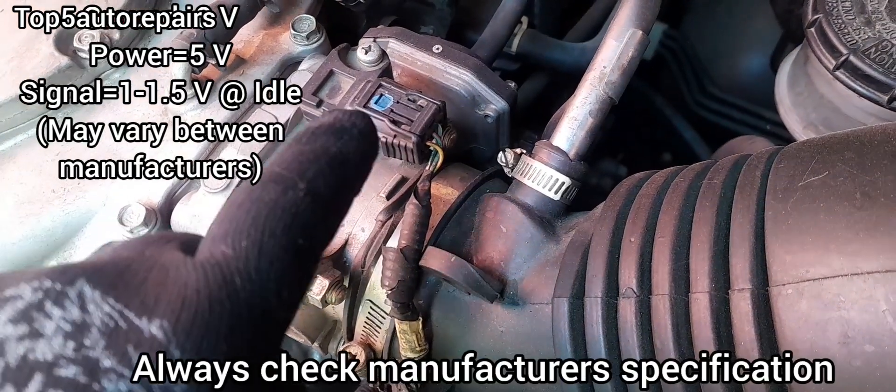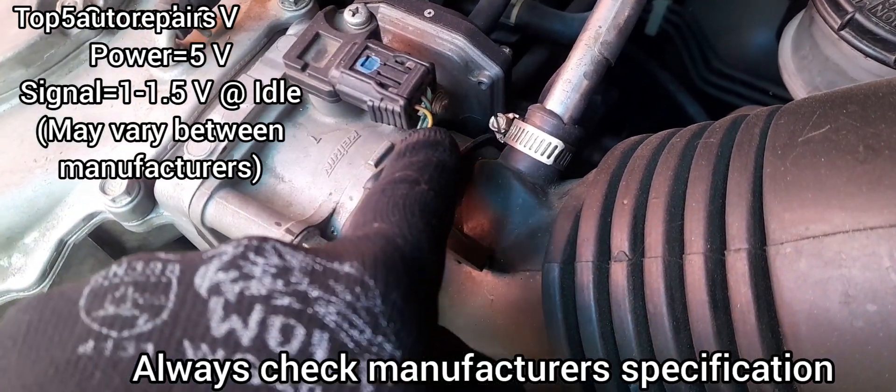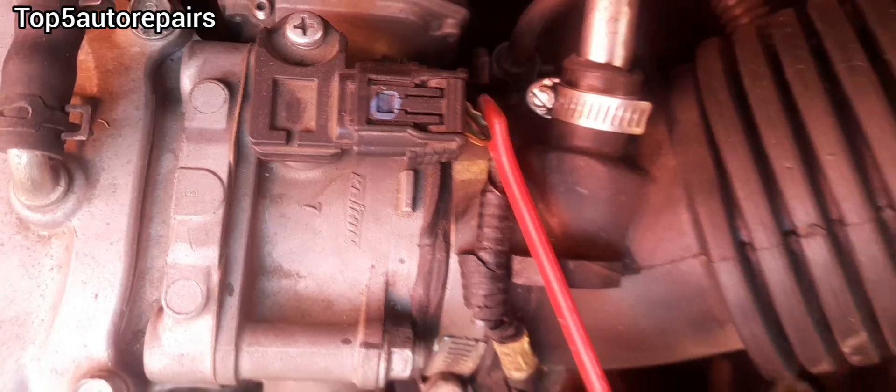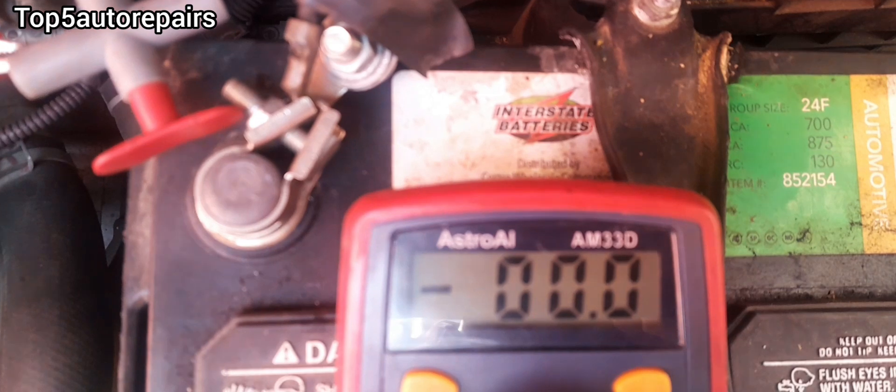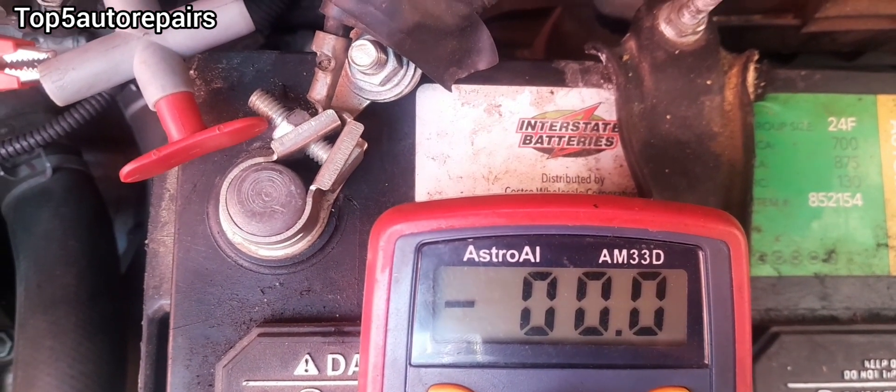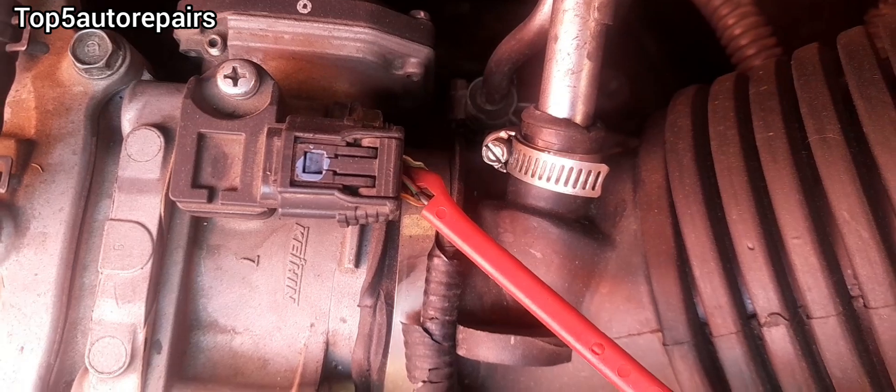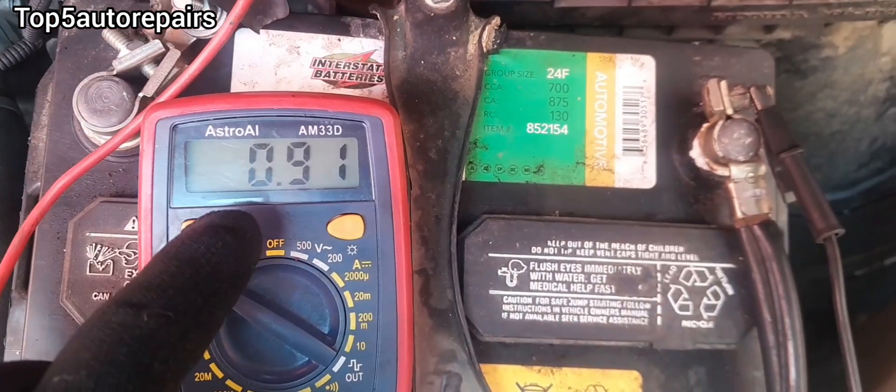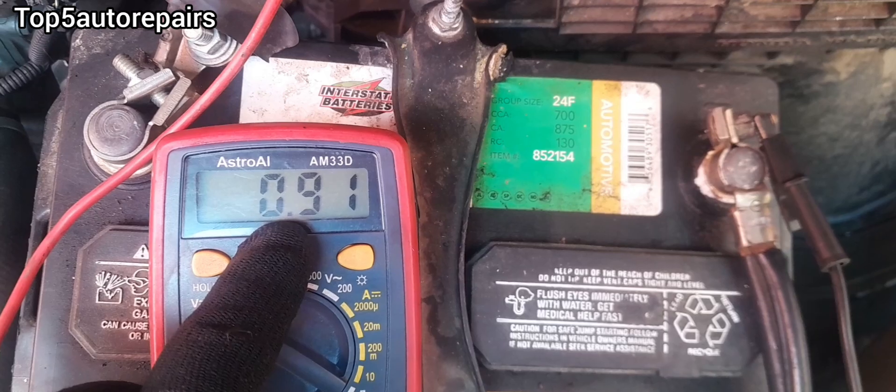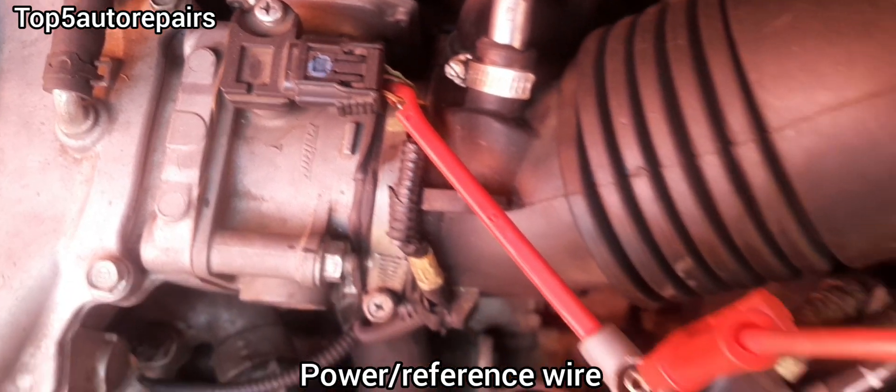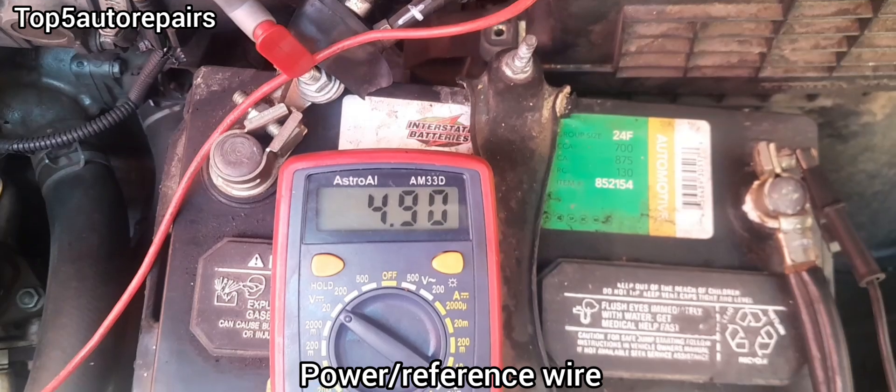Start your engine and begin identifying the wires. This is the ground wire, and voltage should be 0. This is the signal wire, the middle wire, and voltage should be close to 1 volt. This is the power wire, and voltage should be close to 5 volts.